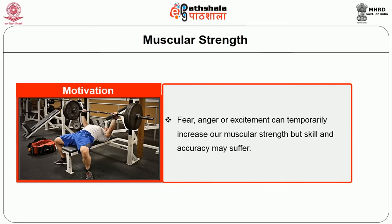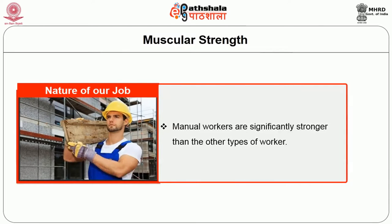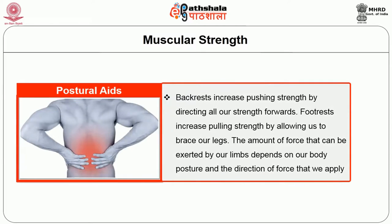Clothing and equipment we carry add to our overall weight, requiring extra muscular strength or energy to move. Motivation and emotional state — such as fear, anger, or excitement — can temporarily increase muscular strength, though skill and accuracy may suffer. The nature of our job also matters: manual workers are significantly stronger than other types. Postural aids: a backrest increases pushing strength by directing force forwards; a footrest can increase pulling strength by allowing us to brace our legs. The force exerted by our limbs depends on body posture and the direction of force applied.